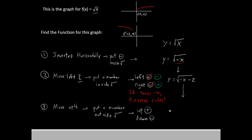So our function is going to change again. We now have y equals root negative x minus 2 inside. And then since we're trying to move upward by 4, we place positive 4 outside the root. And that is our final function. y equals root negative x minus 2 plus 4.